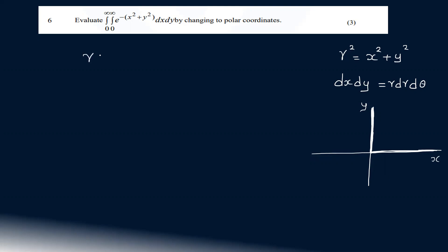r is equal to x square plus y square, and r goes from 0 to infinity. What is the value of the angle? x is 0 to infinity. The positive side of the angle is 90 degrees. So theta ranges from 0 to 90 degrees, that is 0 to pi by 2.